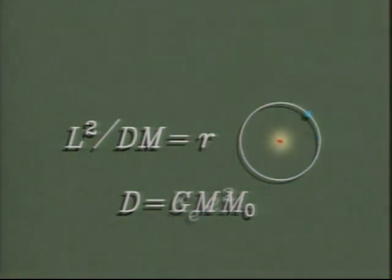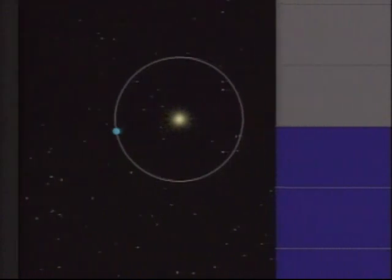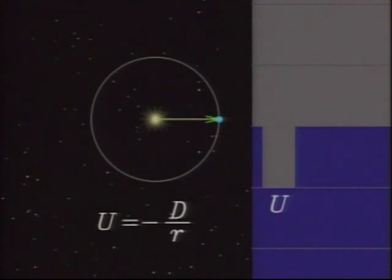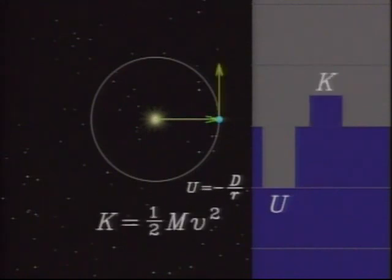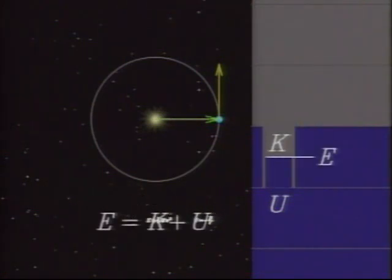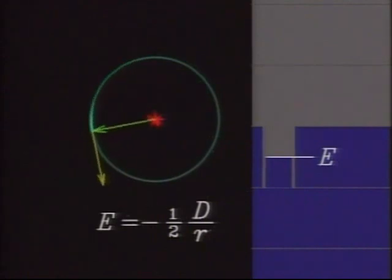To simplify matters, Niels Bohr assumed atoms would have circular orbits. In a circular orbit, the potential energy is minus D over r, and the kinetic energy is positive but half as big. So the total energy is minus one half D over r, whether for a planet or for an atom.